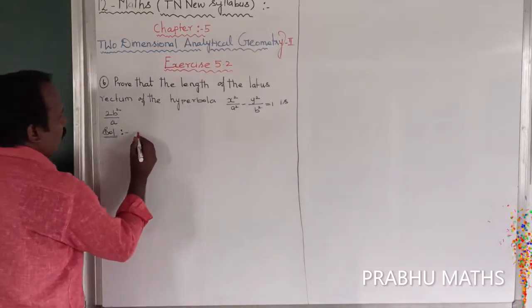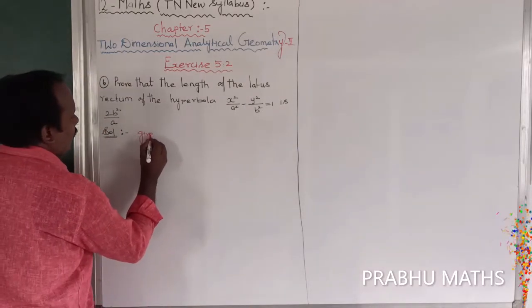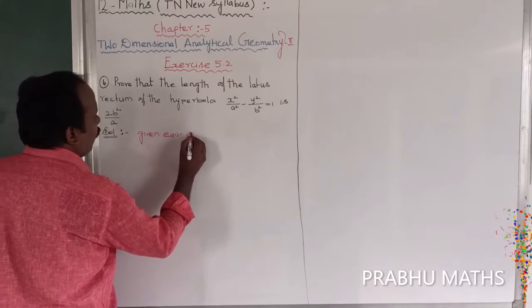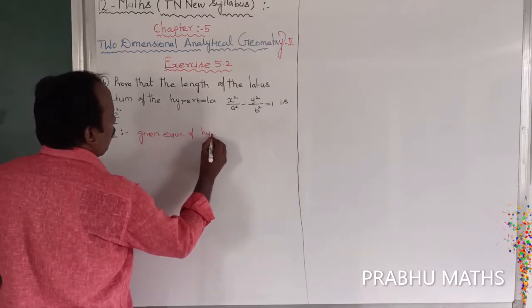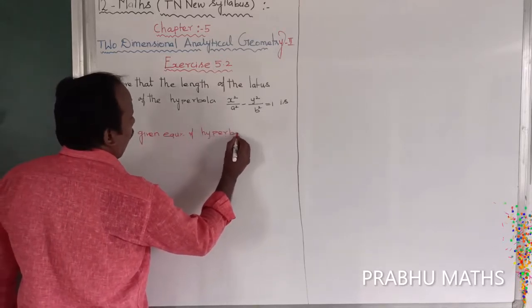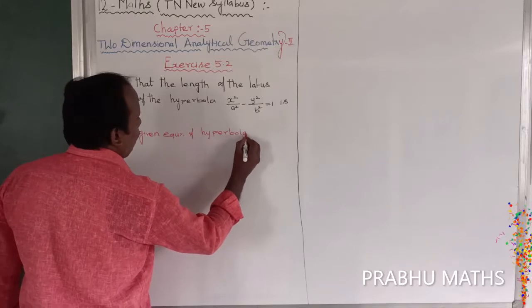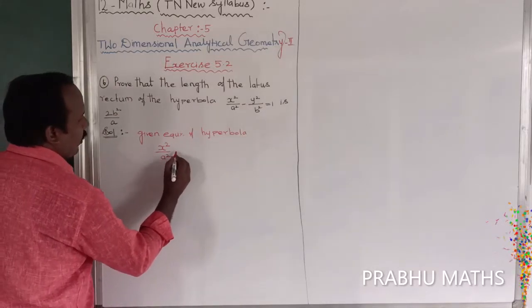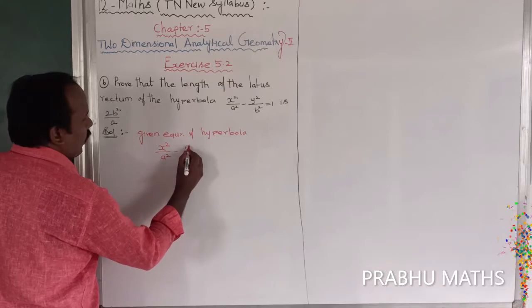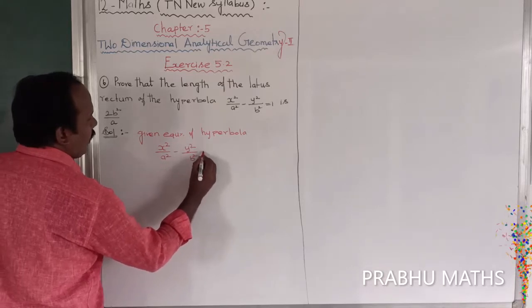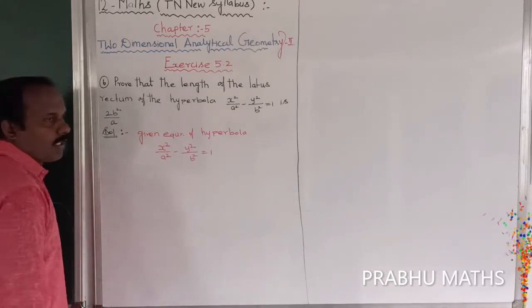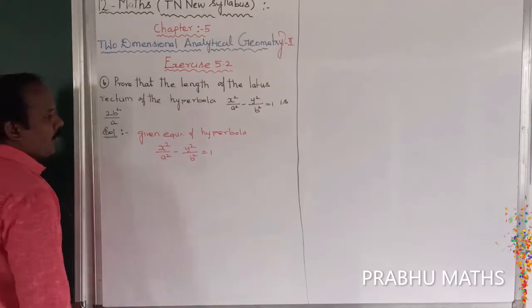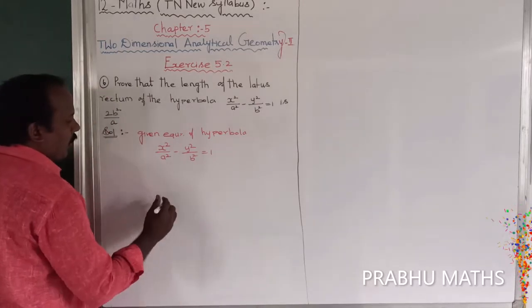The given equation of the hyperbola is x² divided by a² minus y² divided by b² equal to 1. That is the hyperbola.